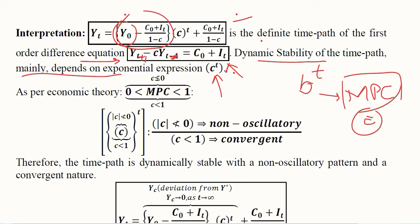We know that MPC is between 0 and 1, so it is less than 1. If considered in absolute value, then it is convergent because the absolute value is also less than 1, making it a convergent case.